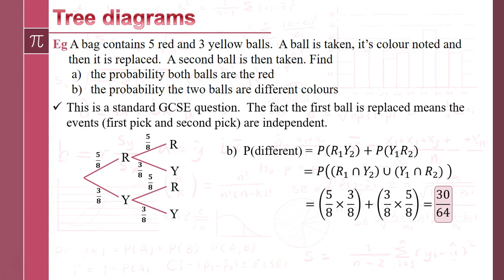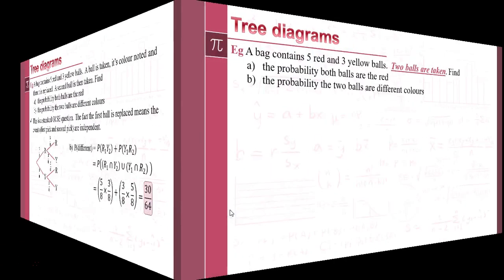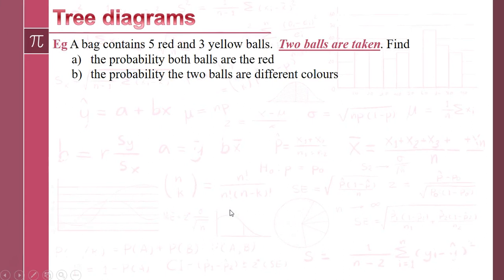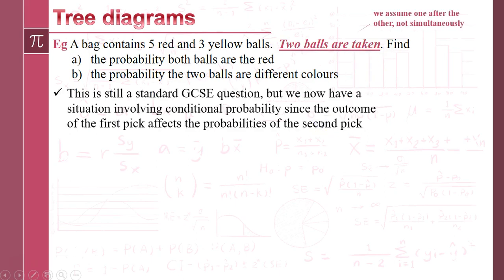That was just a mental walk to get us thinking about tree diagrams and probability notation — intersections, unions, and that kind of stuff. Now let's look at the same situation but changed slightly: two balls are being taken one after the other, not at the same time, so we've got two distinct events.